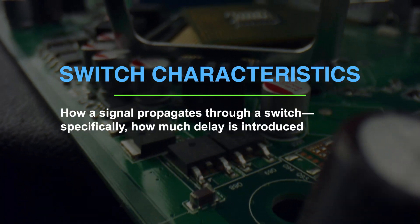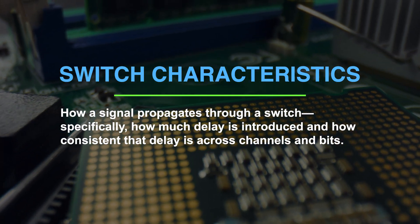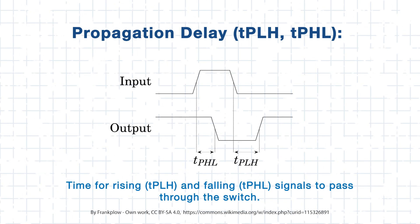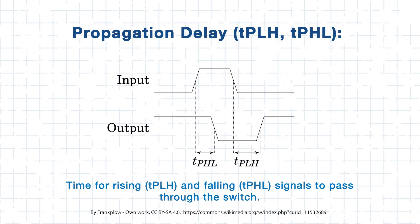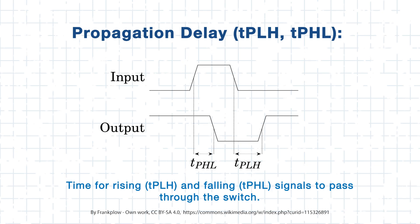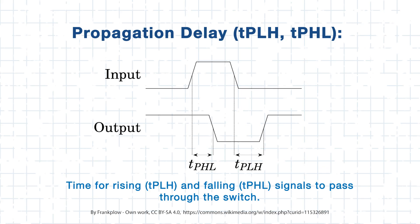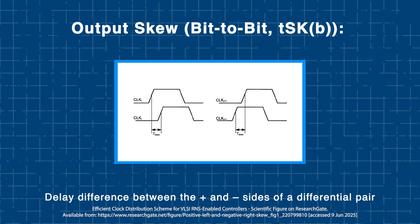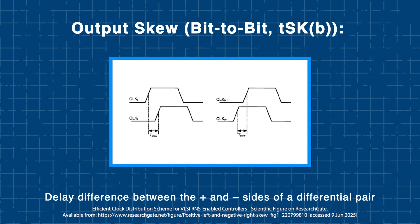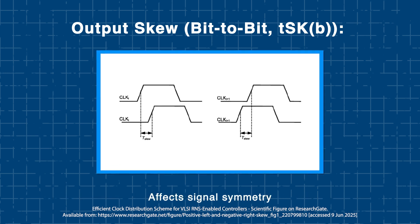Switch characteristics define how a signal propagates through a switch — specifically how much delay is introduced and how consistent that delay is across channels and bits. The TDS4 series quantifies these properties using three main timing metrics. The first is propagation delay: the time a signal takes to travel from input to output. The rising edge delay is labeled TPLH (low to high), while the falling edge is TPHL (high to low). Next is bit-to-bit output skew, which represents the difference in delay between the plus and minus sides of a differential pair, crucial for maintaining signal symmetry.